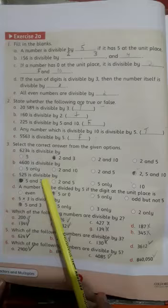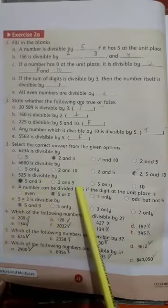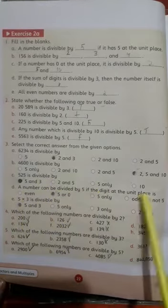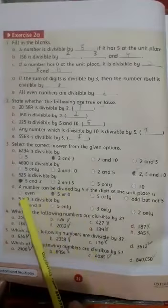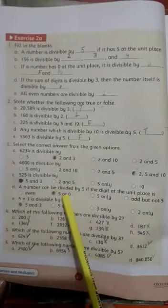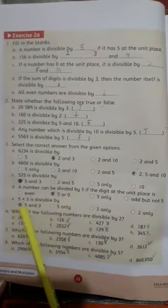C: 525 is divisible by - the answer is A, 5 and 3. D: A number can be divided by 5 if the digit at the unit place is B, 5 or 0. E: 5 multiply 3 is divisible by - the answer is A, 5 and 3.